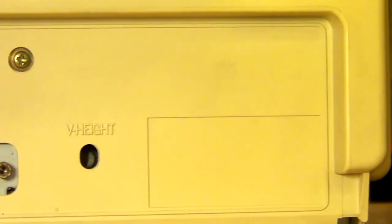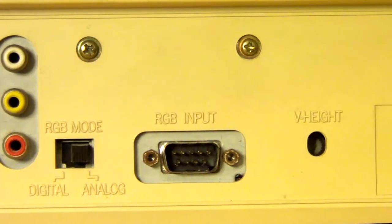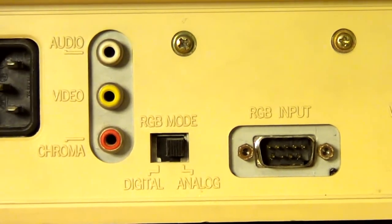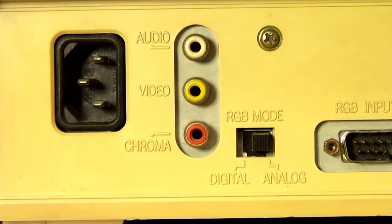The inputs that this beautiful Commodore video monitor provides are a 9-DIN pin RGB input, a toggle switch between analog and digital RGB mode, chroma input, a regular video input and a single audio mono input followed by your power supply.